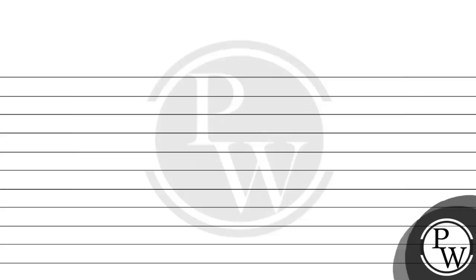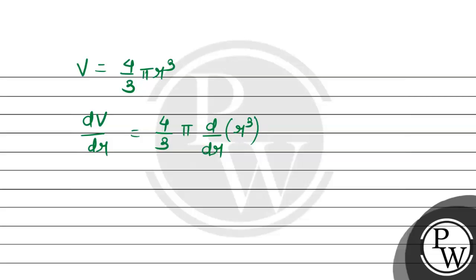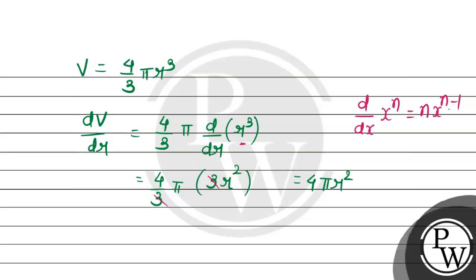Here, V = 4/3 π r³. So with respect to r, dV/dr — taking the constant term outside: 4/3 π times d/dr of r³. Using the general rule d/dx of xⁿ = n·xⁿ⁻¹, we get 4/3 π times 3 times r^(3−1) = r². The 3 cancels out, so dV/dr = 4π r².